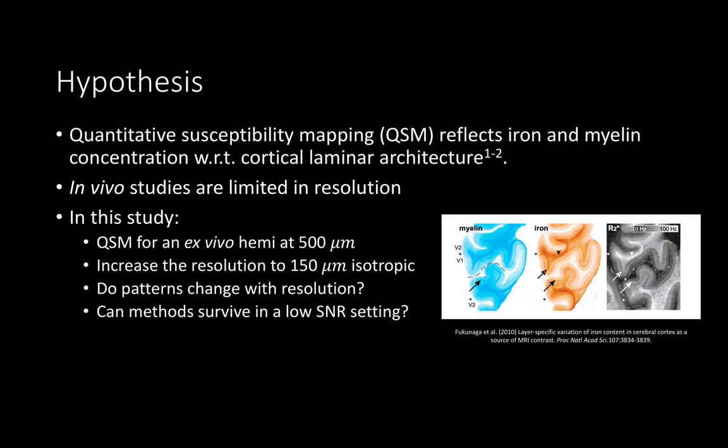In this study we first estimate QSM in an ex vivo human brain hemisphere at 500 micron resolution and present the global patterns we observe. Next we increase the resolution to 150 micron isotropic, a scale which allows infra- and supra-granular layers to become visible, and present a preliminary QSM map estimated in this SNR-starved setting. Here we're interested in analyzing if these patterns change with resolution and evaluating if the current methods can survive at low SNR.